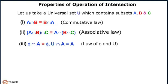Law of phi and universality states that phi intersection A is equal to phi, and U intersection A is equal to A. Here phi is the empty set and U is the universal set.